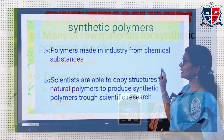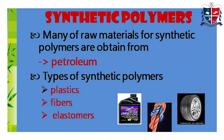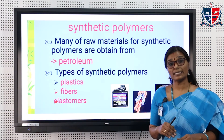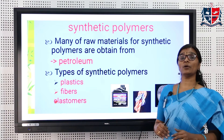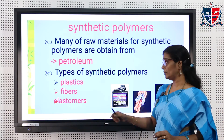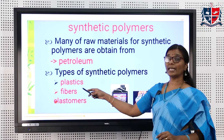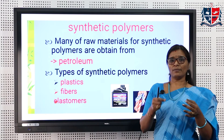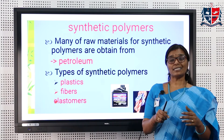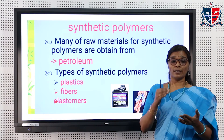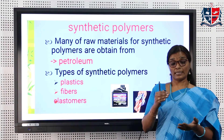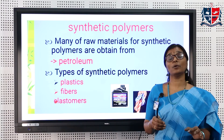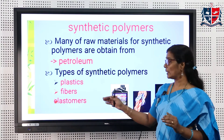The second classification is based on intermolecular force of attraction. Based on this, polymers are classified into three categories: elastomers, fibers, and plastics. Elastomers — the best example is natural rubber. When you apply stress, you can stretch it, meaning it is highly elastic. That is because the intermolecular force of attraction between elastomers is very weak. Materials with weak intermolecular forces are called elastomers.